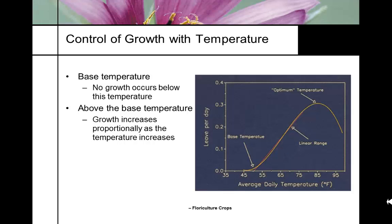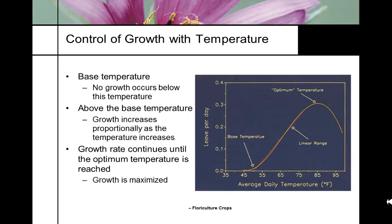Growth rate continues until the optimum temperature is reached, where growth is maximized. As a grower, you need to figure out how fast you want your plants to grow and how much you can afford to heat your greenhouse. Once you get past the optimum temperature, plants start to decline because it's just too hot.